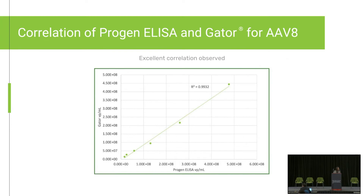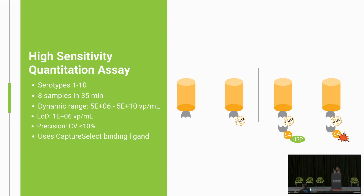This is our correlation study comparing our assay to the Progen ELISA — here is an example for AAV8. If you want to see more data, we have a thorough study in the application notes available on our website, so feel free to download it. It shows very good correlation. To achieve higher sensitivity at lower concentrations, we also developed high sensitivity kits for both AAVX and AAV9.